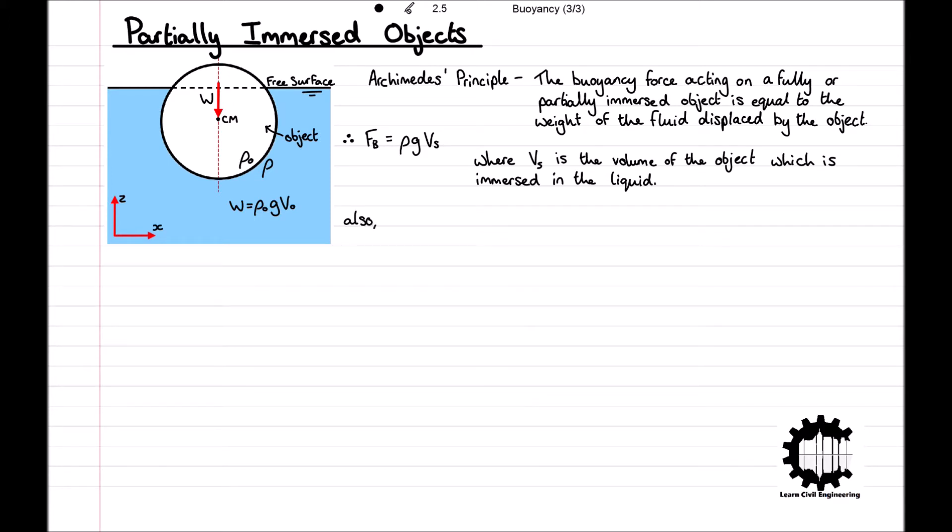Note that we can also write the immersed volume as Vs = kV₀, where k is the proportion of the object's volume that is immersed. This is useful when we are not given the volume but are given the percentage of the object that is immersed.